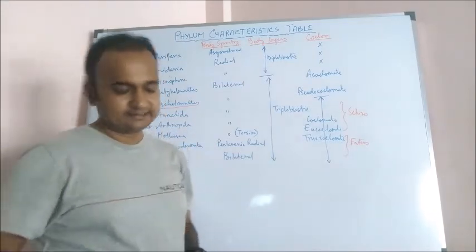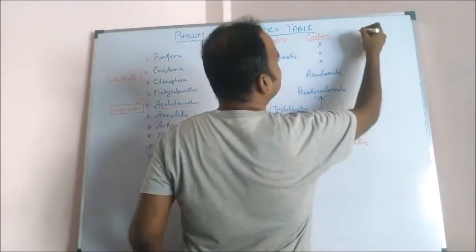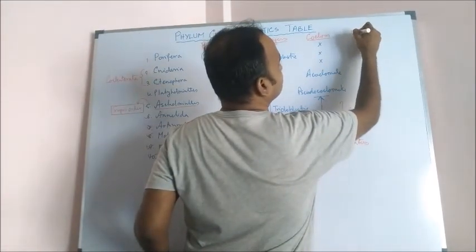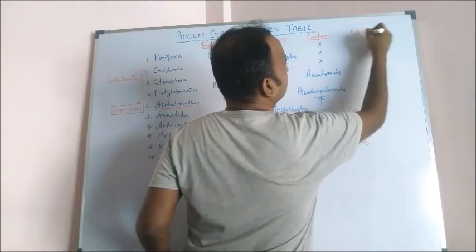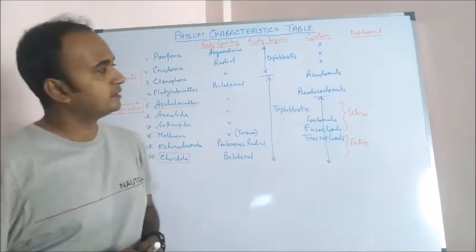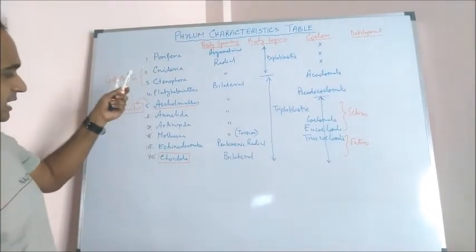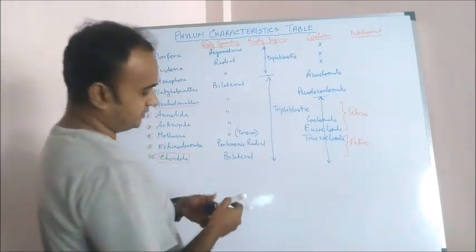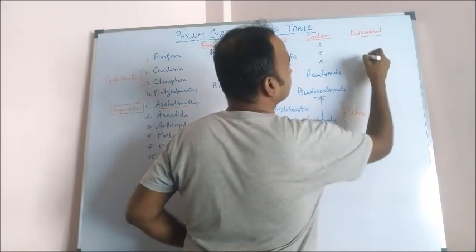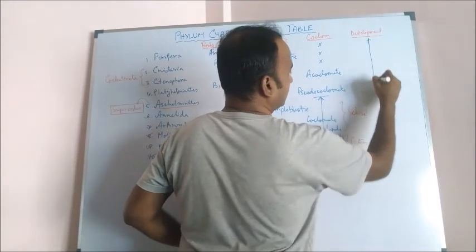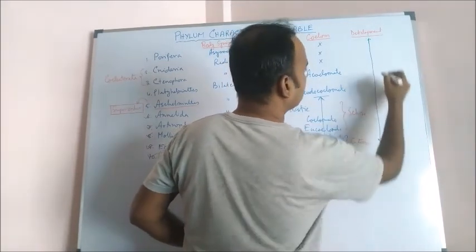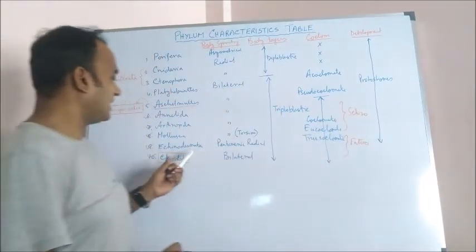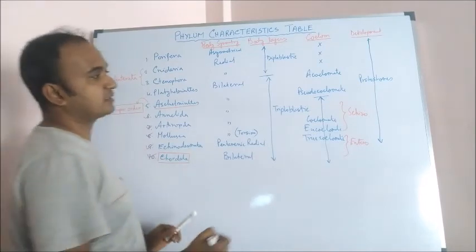Next characteristics: coelom development or difference in developmental pathways. Starting from Porifera up to Mollusca, they are called protostomes. And last two, that is Echinodermata and Chordata, these two are called deuterostomes.